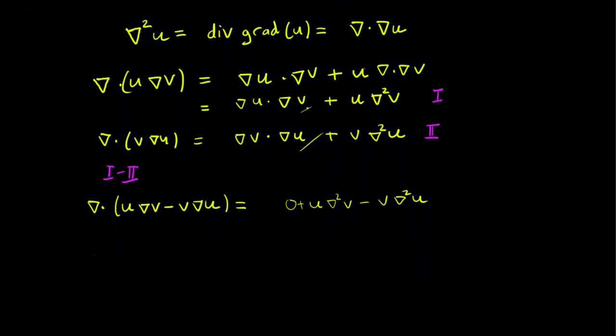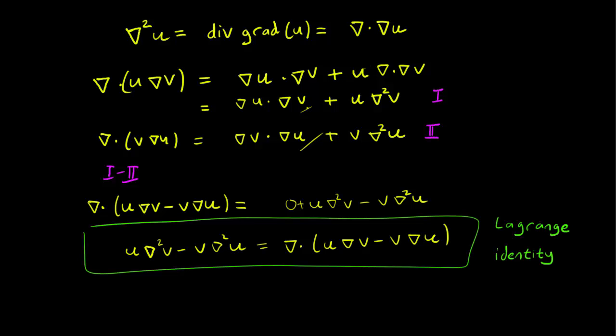So this is indeed the Lagrange identity that we want. However, let's just switch it over to the other side since that's how the book does it. So we have u Laplacian of v minus v Laplacian of u equals the divergence of u gradient v minus v gradient u. And this is our Lagrange identity for the Helmholtz function in higher dimensions.